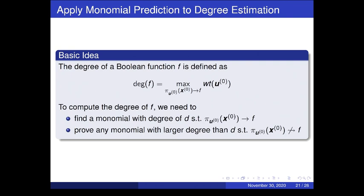Additionally, if we can know whether a monomial appears in the Boolean function, we can compute the exact degree of that Boolean function. First, we find a monomial of degree D and determine that it is contained by F. Then, second, we prove that any monomial with degree larger than D will not appear in F. Then we can determine that the degree of F is exactly D.